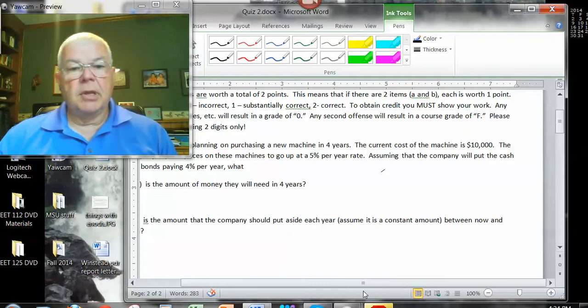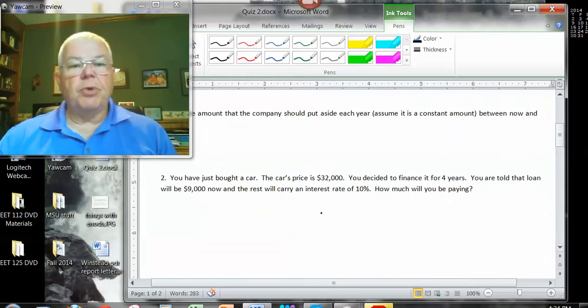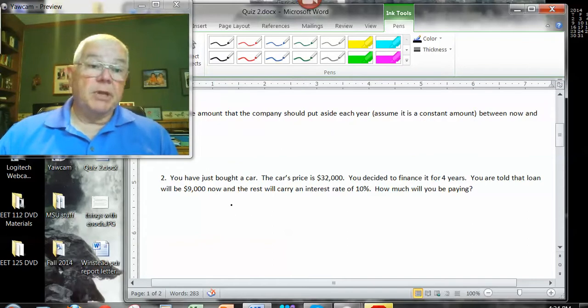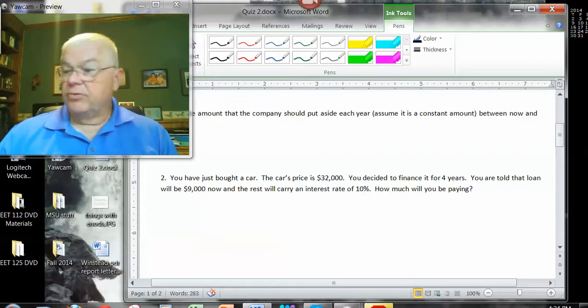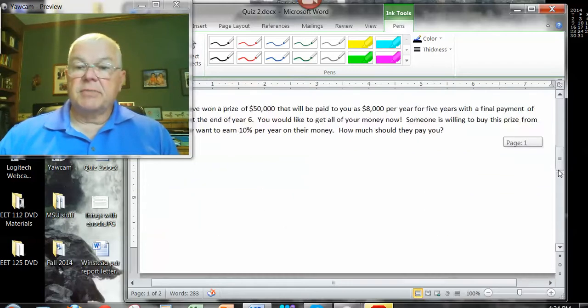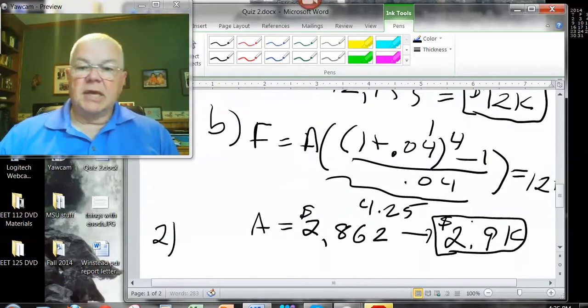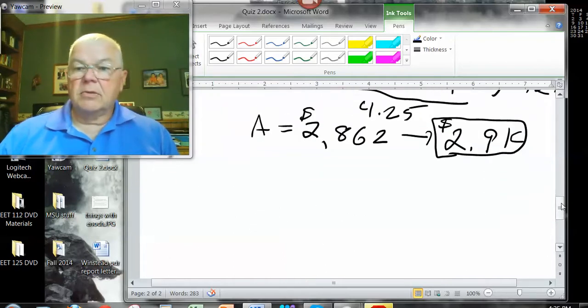Let's look at number two here. Number question two here, you bought a car, you can finance a car, it costs $32,000, you're going to finance it for four years, the loan is going to be $9,000 down, and the remainder at 10%. How much will you be paying? What is the annual pay rate for this? Well, let's think about that. Sometimes it helps to do a little cash flow, because it's not always completely clear what's going on here.